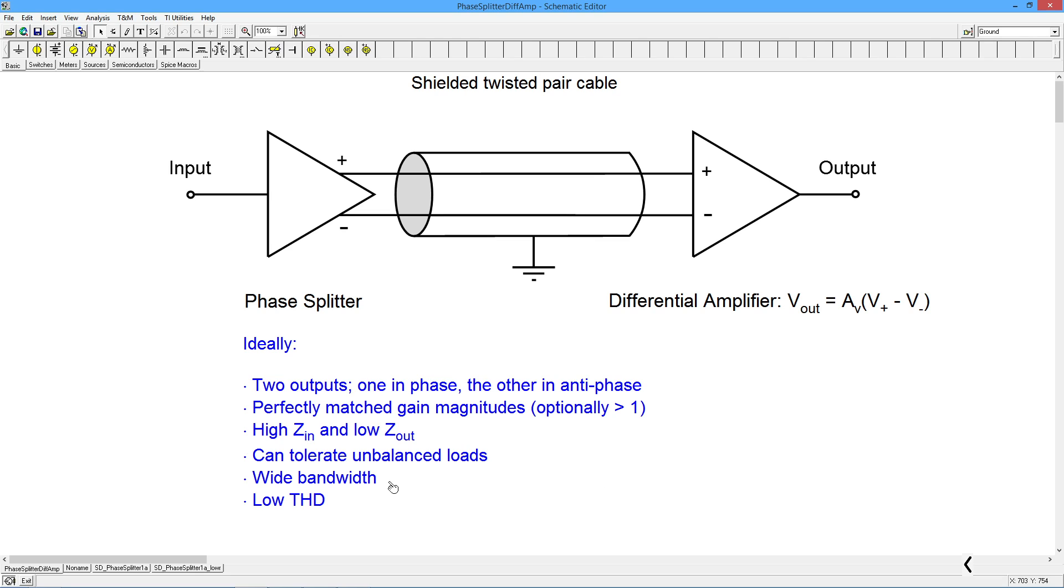That would be like having a 100 ohm value for this line and a 200 ohm value for this line. So ideally, it would be able to handle unbalanced loads. It would have a wide bandwidth. In other words, certainly sufficient for whatever you need on the low and high ends, the F1 to F2 would be sufficient. And it would have low distortion.